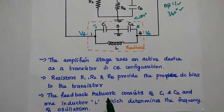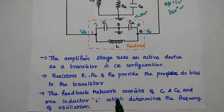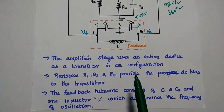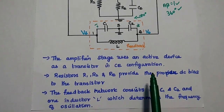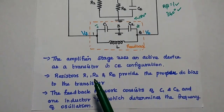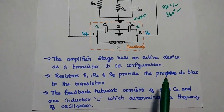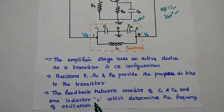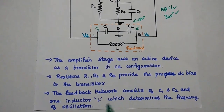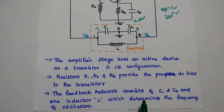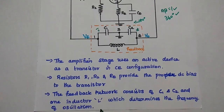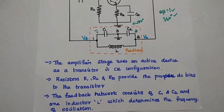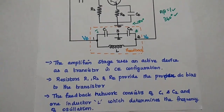The amplifier stage uses a transistor in CE configuration. Resistors R1, R2, and RE provide proper DC bias to the transistor. The feedback network consists of C1, C2, and one inductor L, which determines the frequency of oscillation.